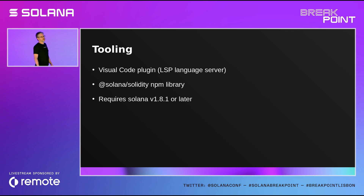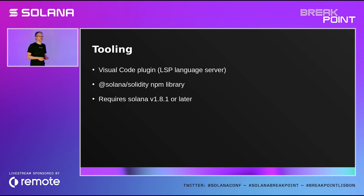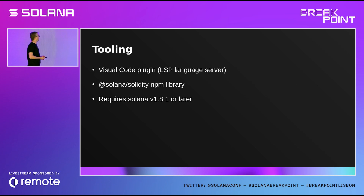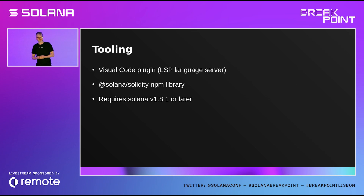We also have more tooling. Because it was written in Rust, we can use a whole bunch of Rust crates. There is a Rust crate for language servers, so we have implemented that — we have a language server, which means we also have a Visual Studio Code plugin that gives you nice hovers of types, warnings, errors, and squiggly lines. It should also work in other IDEs. We have a new NPM library called @solana/solidity which allows you to deploy, call Solidity contracts, get events, get return values, etc. All of this requires Solana 1.8.1, because we needed to add some functionality to Solana to make this work.